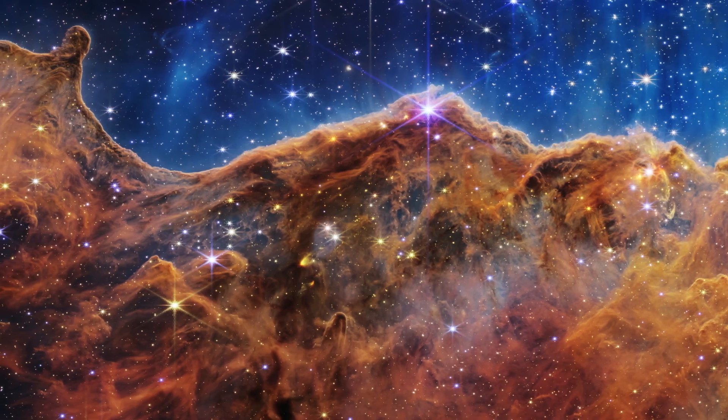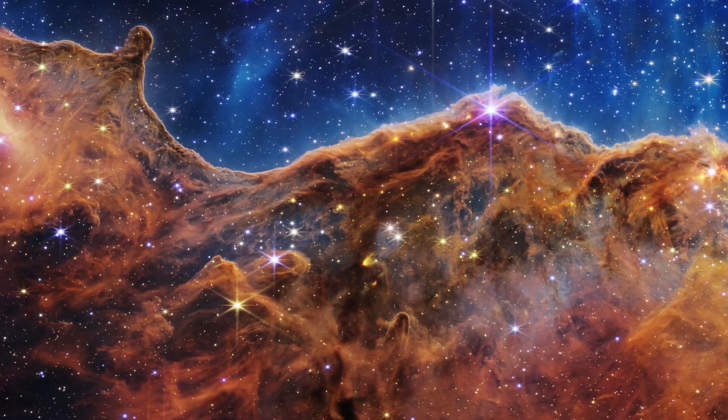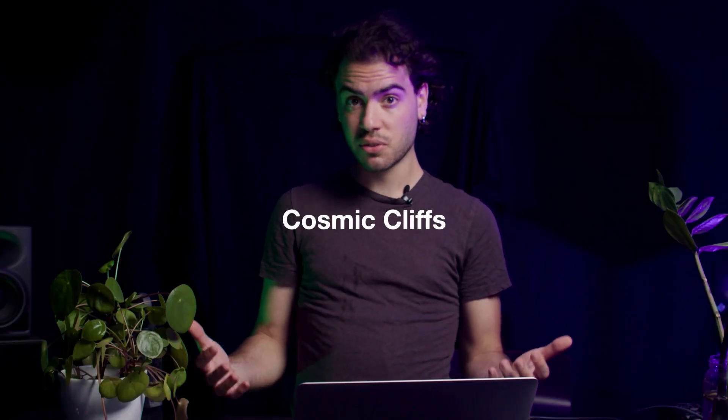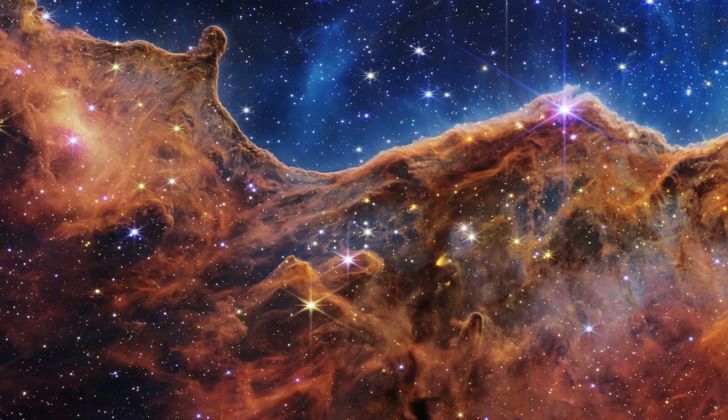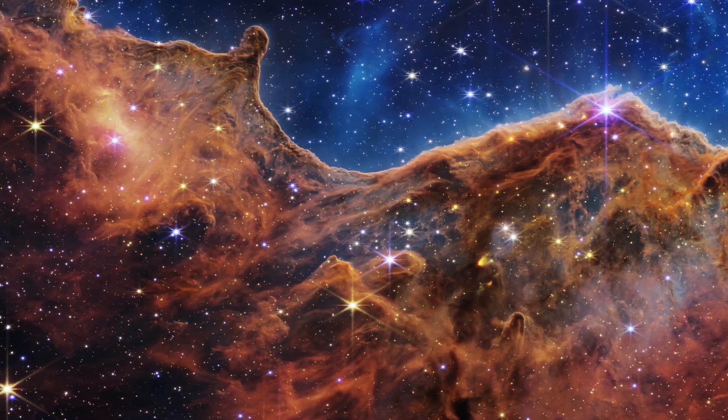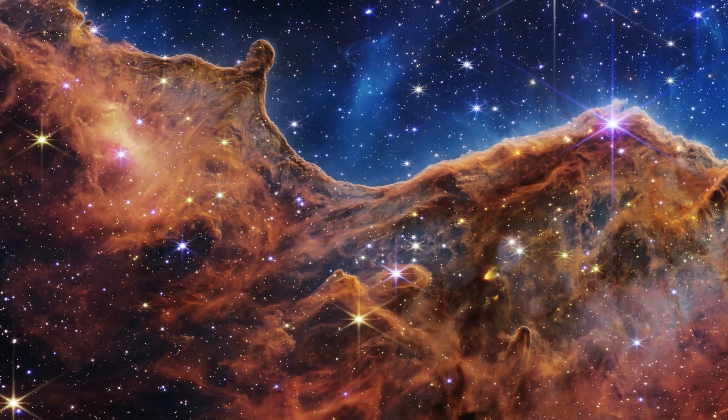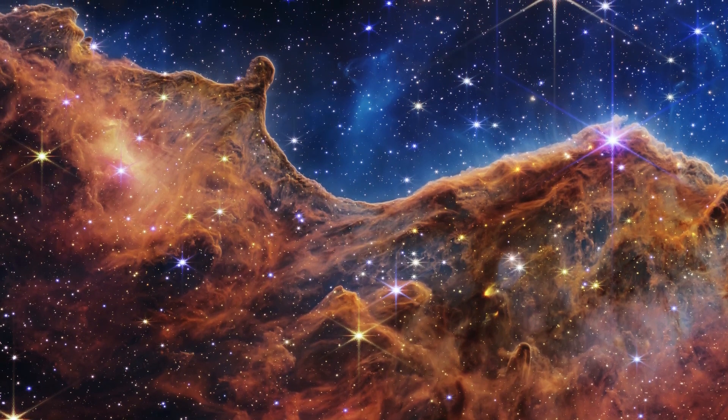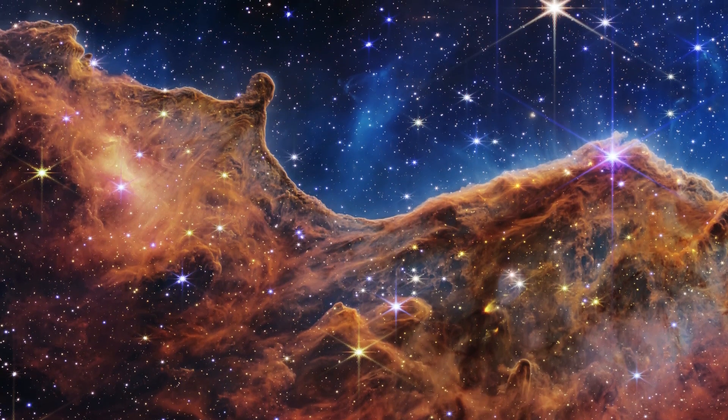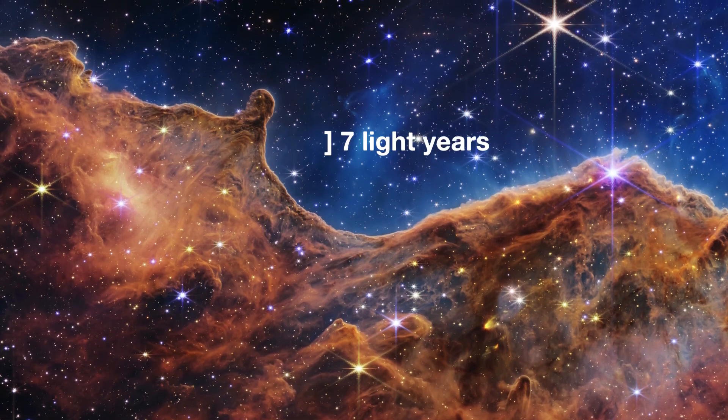this image reveals for the first time previously invisible areas of star birth called the Cosmic Cliffs. Webb's seemingly three-dimensional picture looks like craggy mountains on a moonlit evening. In reality, it is the edge of the giant gaseous cavity within NGC 3324, and the tallest peaks in this image are about seven light-years high.